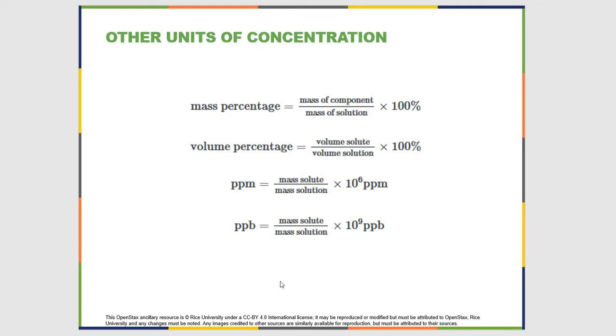Mass percentage or volume percentage is the mass of the component divided by the mass of the solution, or the volume of the solute over the volume of the solution—the part divided by the whole. They're times a hundred because they're percentages. These are used often in the healthcare industry.